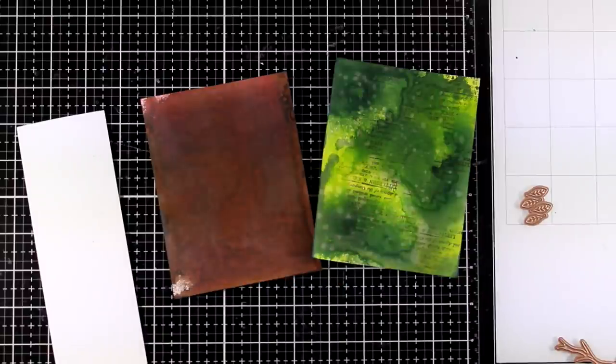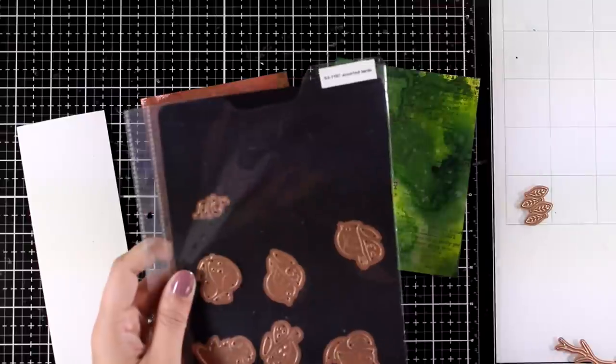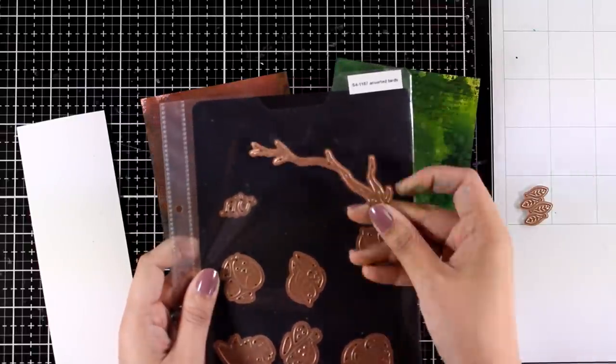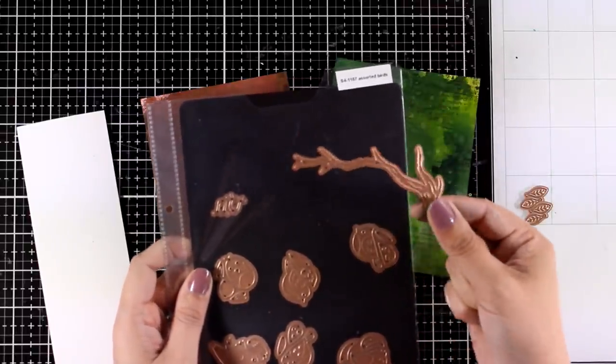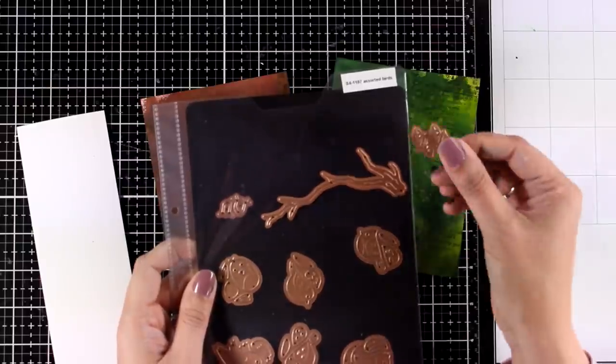I'm also going to bring in one more set from my designs and these are the birdies. This one includes the branch which I absolutely adore. I'm going to embellish it with the leaves.